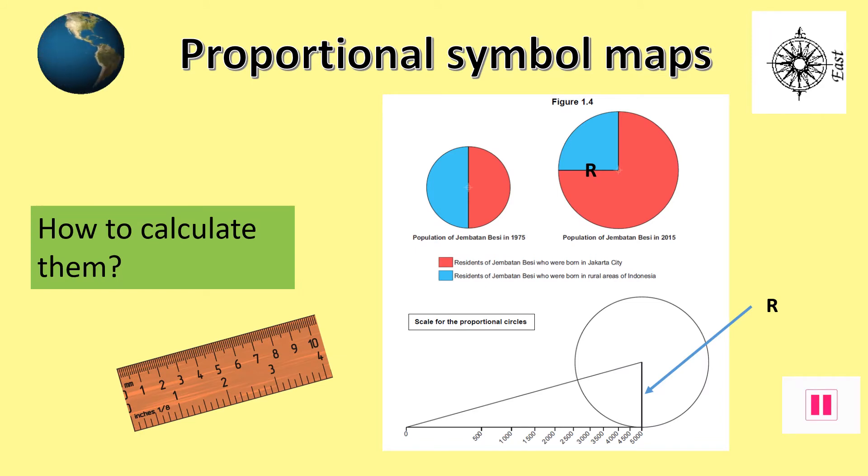I will now show you how to work out how to calculate the sizes. The examiner will always provide a key. You will need a ruler and a steady hand. When looking at the key, make sure you can interpret it properly. First, measure either the radius, shown as r on the screen, or diameter of the circle. Secondly, match your answer to the key and work out the value. Double check that your answer looks sensible compared to any information given.